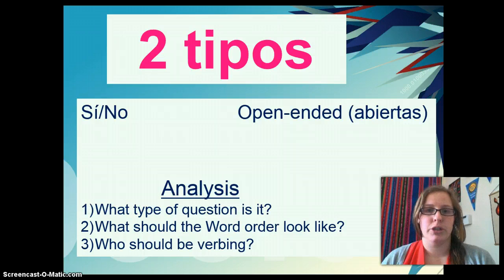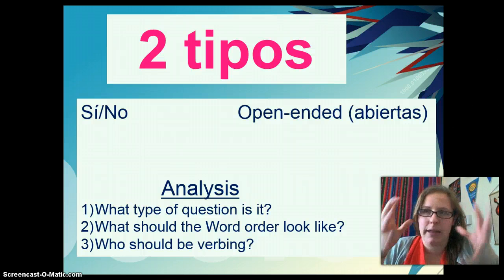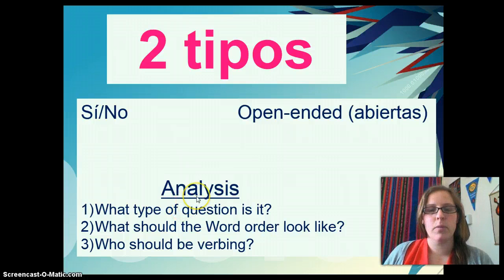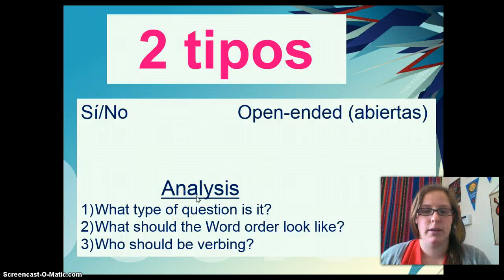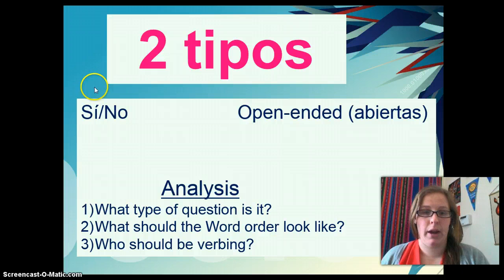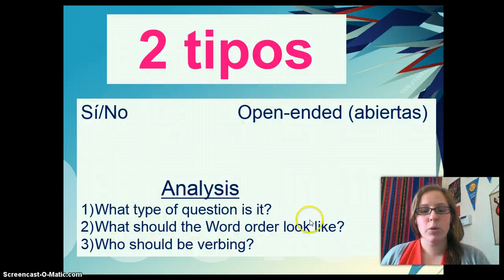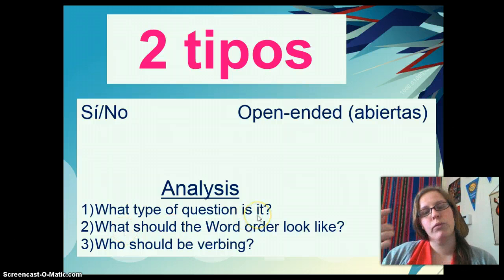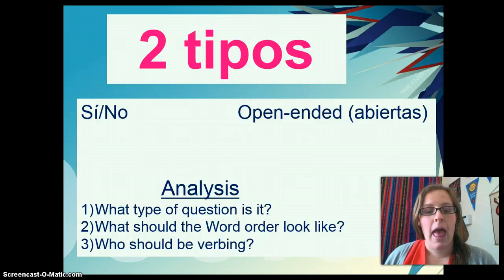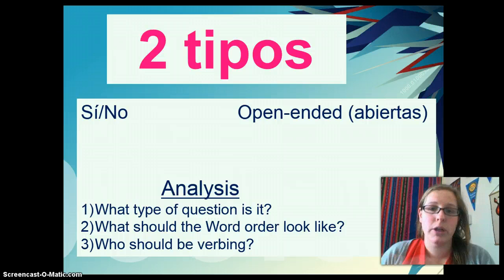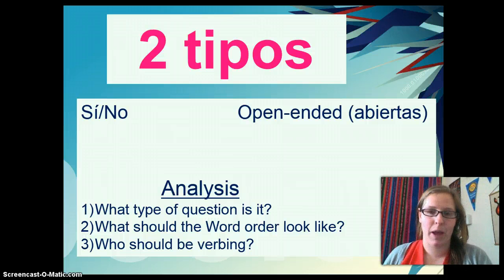As we look at our questions and try to tackle answering them, we're going to ask ourselves these analysis questions. What type of question is it? There's only two, and it will become really obvious which type it is. What should the word order look like? We'll revisit that piece at the end and it will make sense. And then finally, who should be verbing? We always ask ourselves this whenever we talk about anything, so questions are no different. We really want to make sure the correct person is verbing.